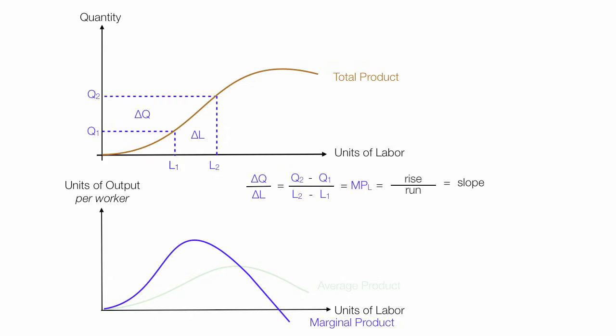So marginal product is equal to the slope of the total product curve at any particular point. In this case we let the change in labor be very small, in fact the change in labor is one labor unit.